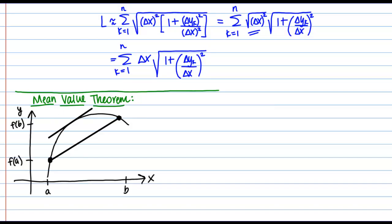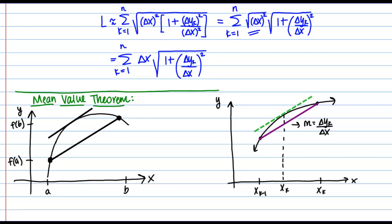So why does this matter? Here, delta y sub k over delta x is the slope of a secant line. Specifically, it's the slope of the little line segment that we drew before in our previous illustration, the line segment we were using to approximate our curve. So, the secant line with slope delta y sub k over delta x. According to the mean value theorem, there must be some point on our subinterval where the slope of this secant line equals the slope of a tangent line. We'll call the special point where this happens x_k star. Every subinterval is going to have one of these special points, x_k star.